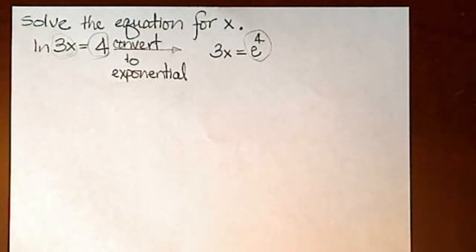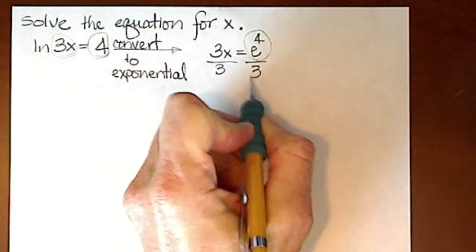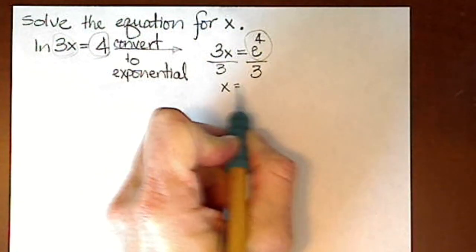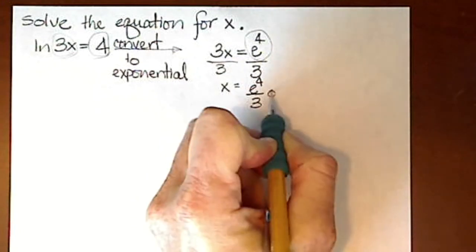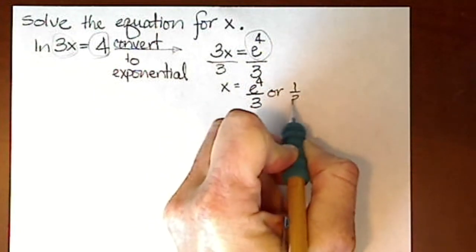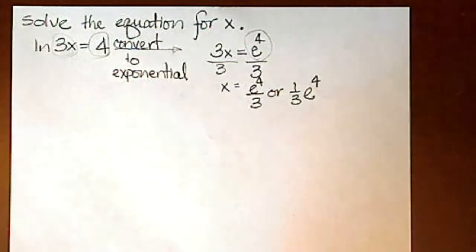To solve for x, we simply divide both sides by three, and we get x equals e to the fourth divided by three, or one-third e to the fourth. That would be the exact answer.